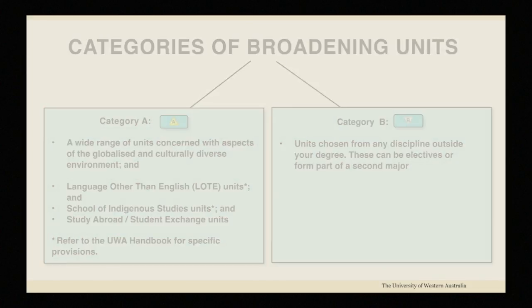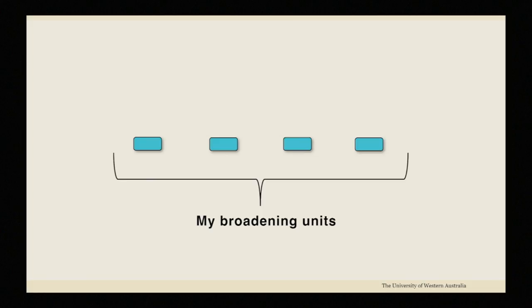You must pass at least four broadening units during your degree and at least one of them must be a category A unit. But you can do two or three or more if you like.